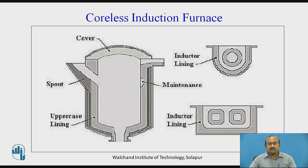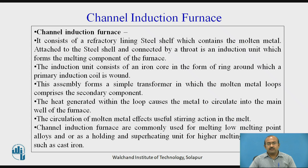The coreless induction furnace parts are shown individually. The channel induction furnace consists of a refractory-lined steel shell containing the molten metal. Connected to the shell by a throat is an induction unit that forms the melting component. The induction unit consists of an iron core in the form of a ring around which a primary induction coil is wound, forming a simple transformer in which the molten metal loop acts as the secondary component. Heat generated within the loop causes the metal to circulate into the main well, producing a useful stirring action in the melt.